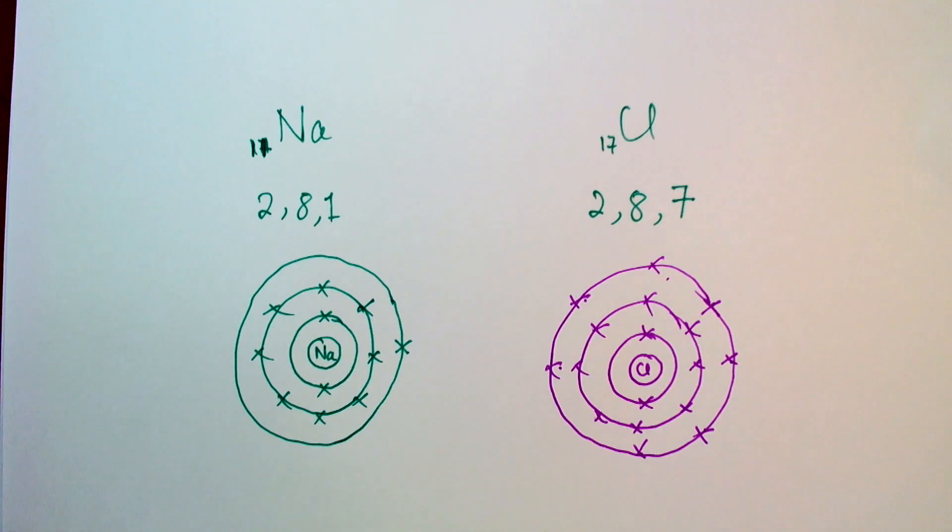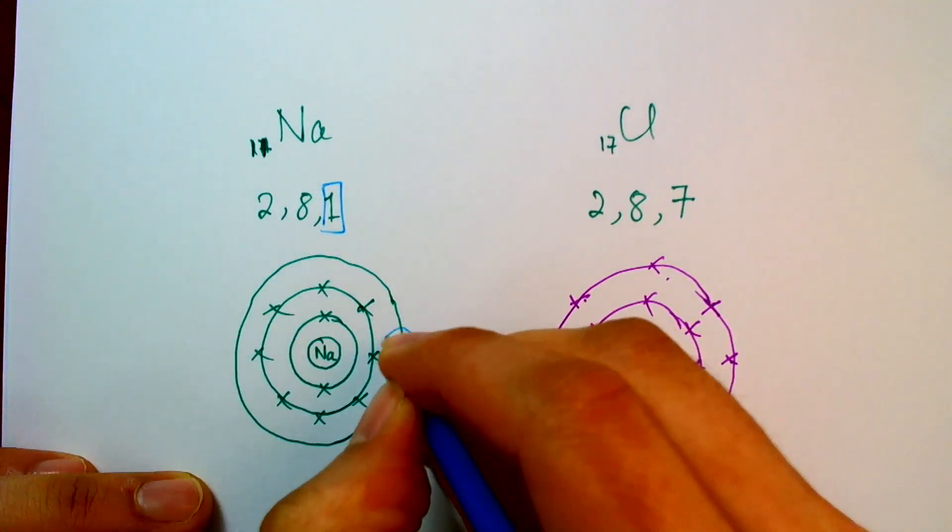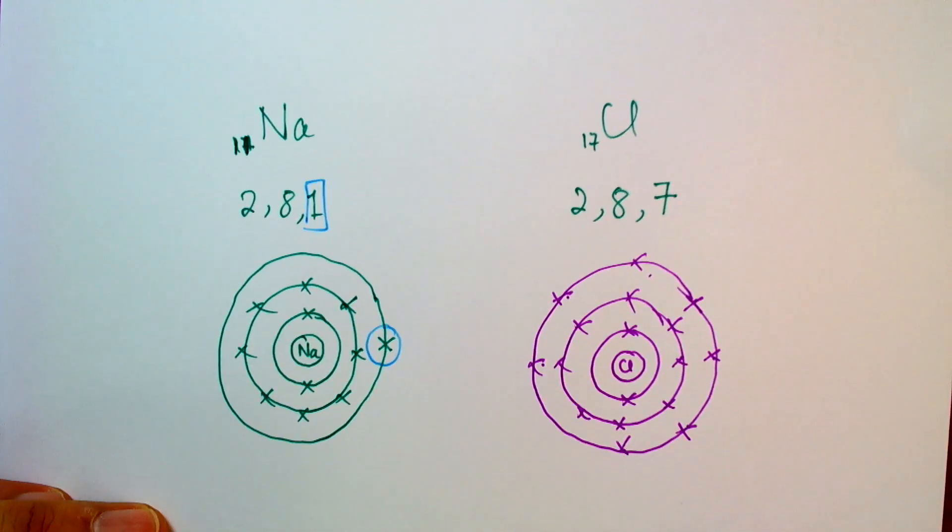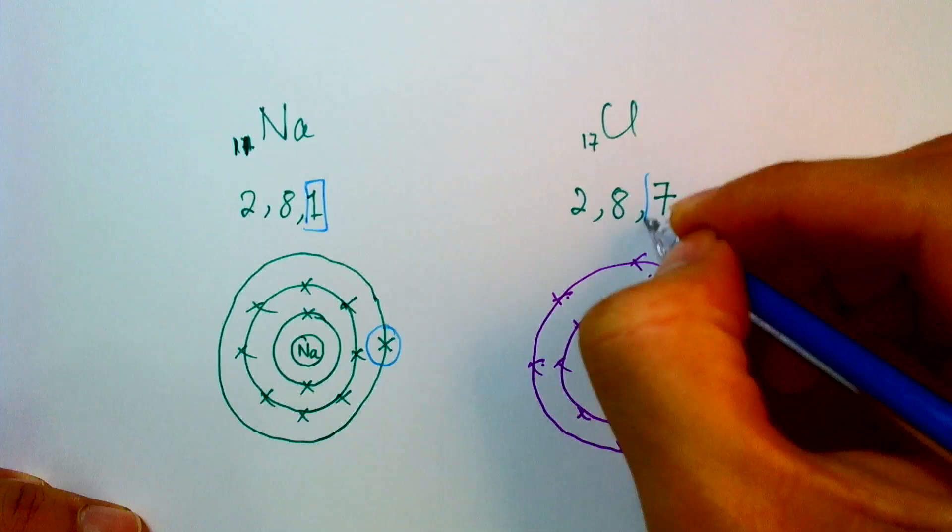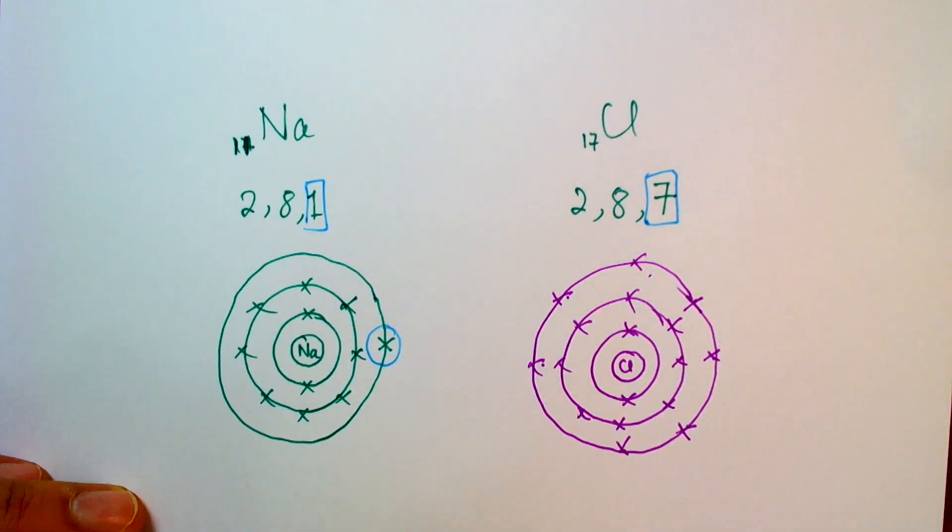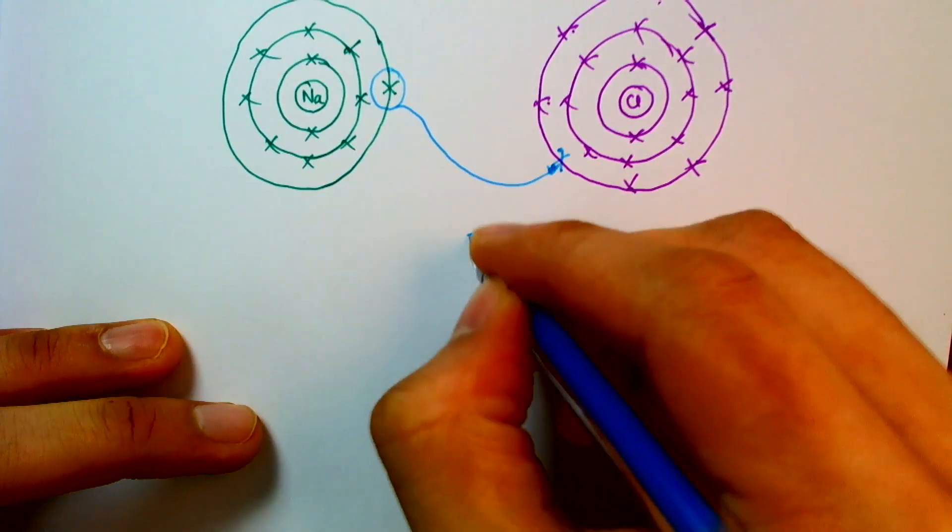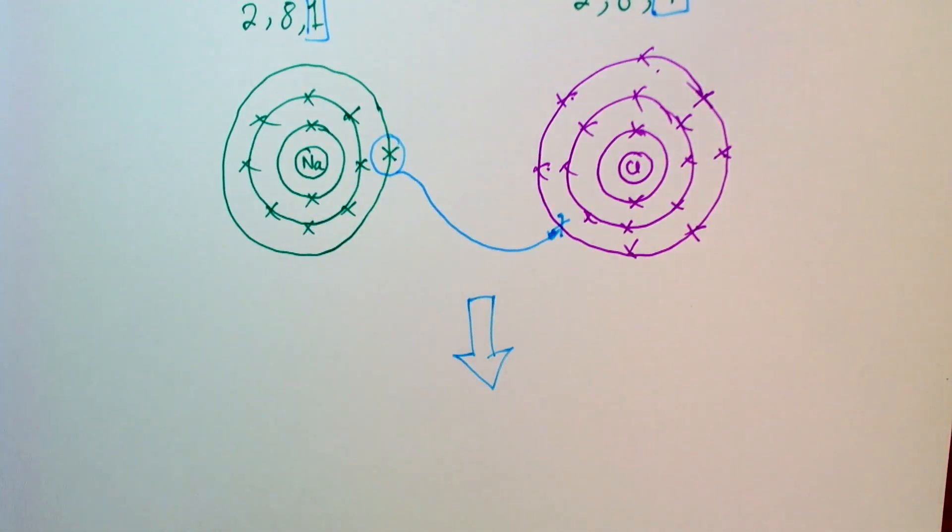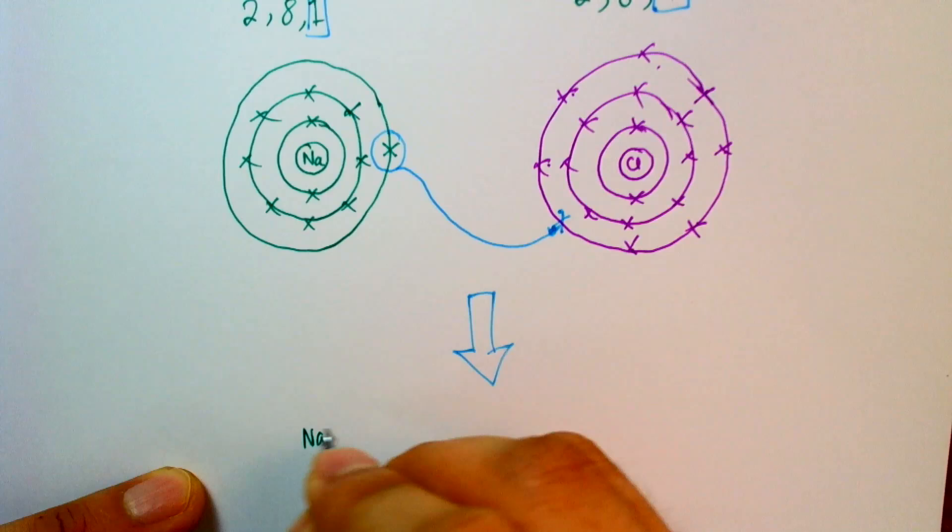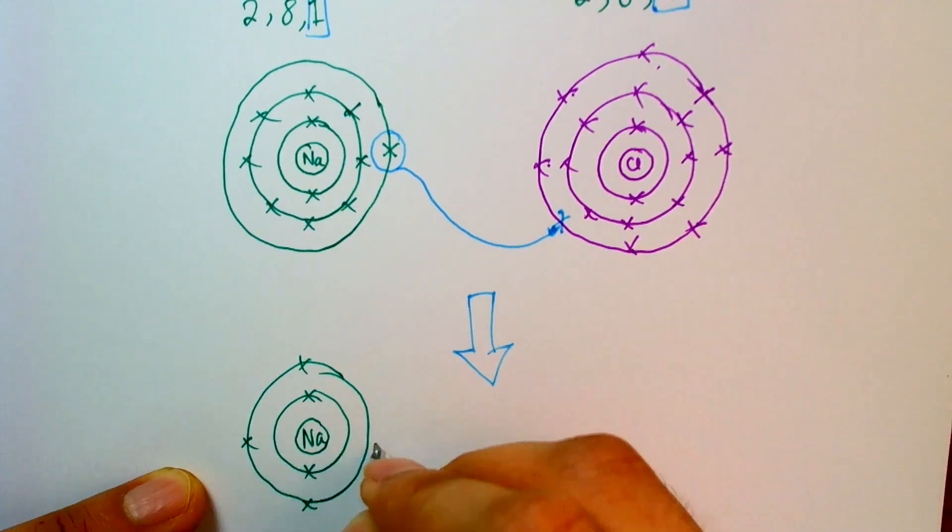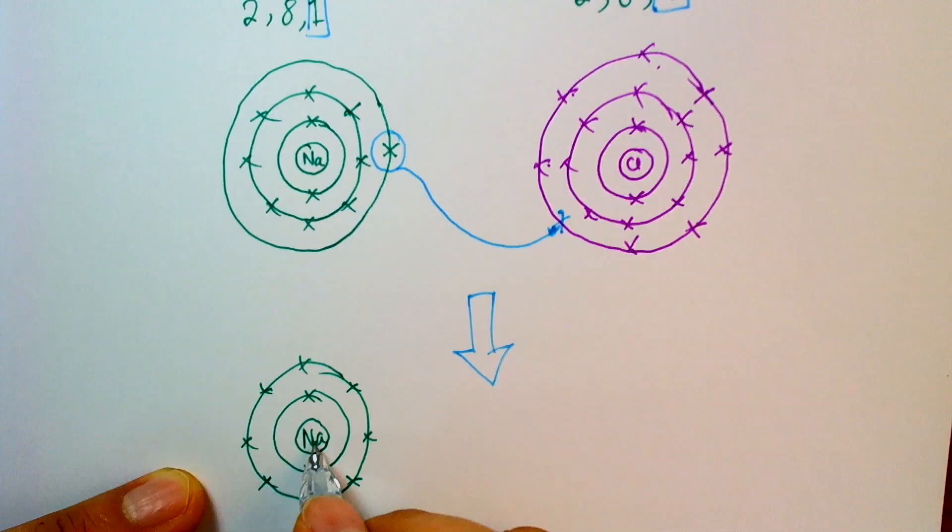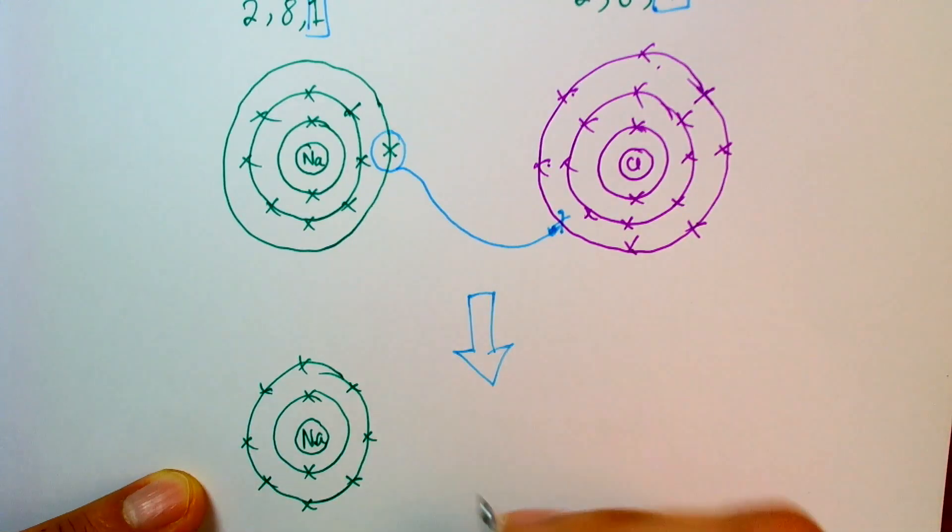So sodium meets chlorine. And sodium says, well, if only I could get rid of my one outer shell electron, I would be happy. And chlorine says, if only I could gain one electron, because then I would have 8, I would be happy. So sodium says, I will give you one of my electrons, and you'll be happy, and I'll be happy. So what we end up with is a scenario where now my sodium atom, having lost one electron, turns into a sodium ion. Because remember, the protons didn't go anywhere. So sodium still has 11 protons in its nucleus, but now it only has 10 electrons. So it's got a positive charge. We write that, Na+.